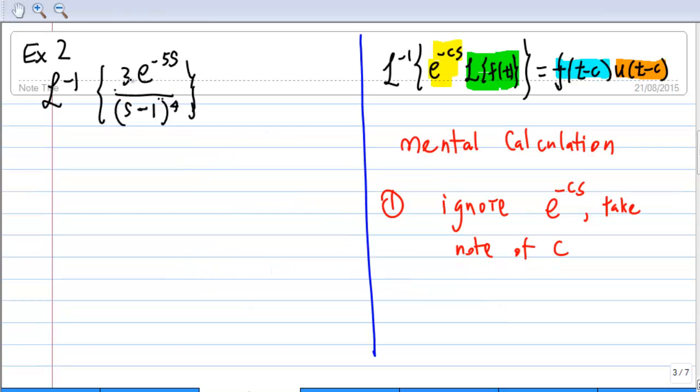For example 2, I'm going to find the inverse Laplace transform of 3 times e power negative 5s over s minus 1 raised to the power of 4.